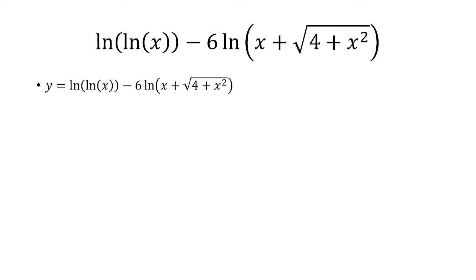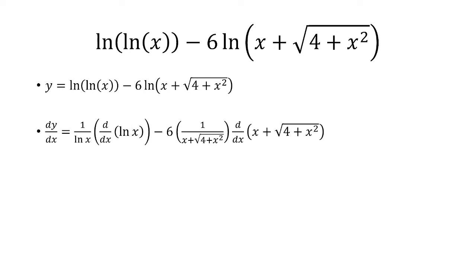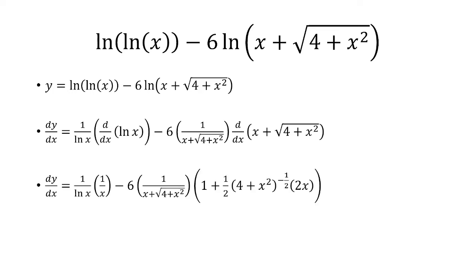We know the derivative of natural log is 1 over x, so it's going to be 1 over ln of x times the derivative of natural log of x. And then same thing with the natural log of x plus the square root of 4 plus x squared — we're going to do 1 over whatever is inside the parentheses and then take the derivative of whatever is inside the parentheses. The derivative of natural log of x is 1 over x.